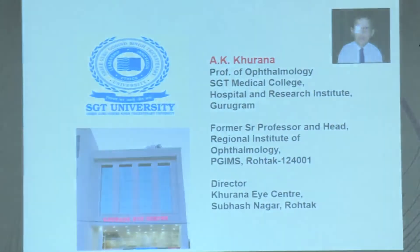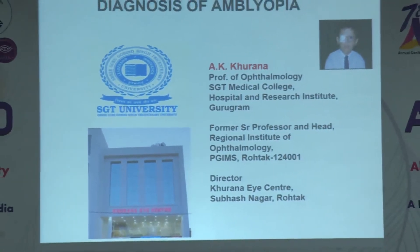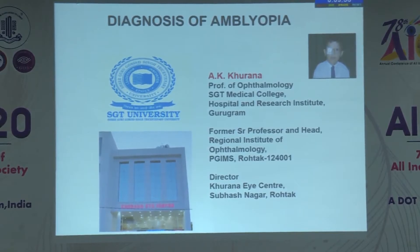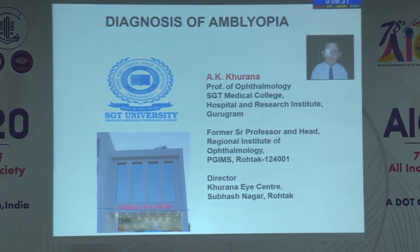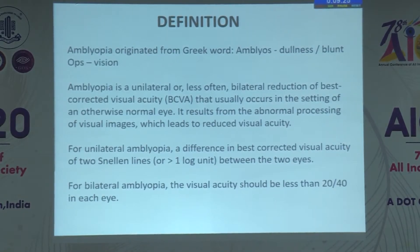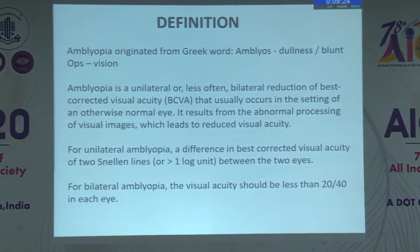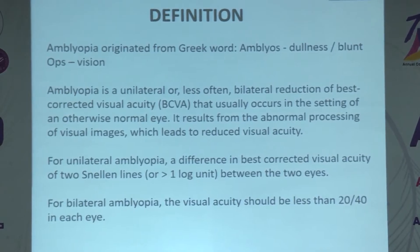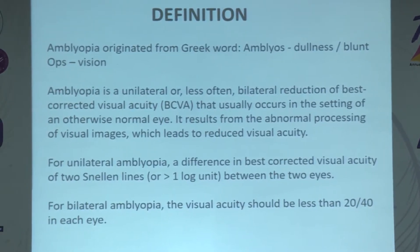Good morning everyone. I convey my thanks to Professor Dadia for asking me to speak on diagnosis of amblyopia in this instruction course. Amblyopia is a word that has originated from two Greek words: amblyos meaning dullness or blunt, and ops meaning vision. So basically amblyopia is nothing but dullness or decreased vision.